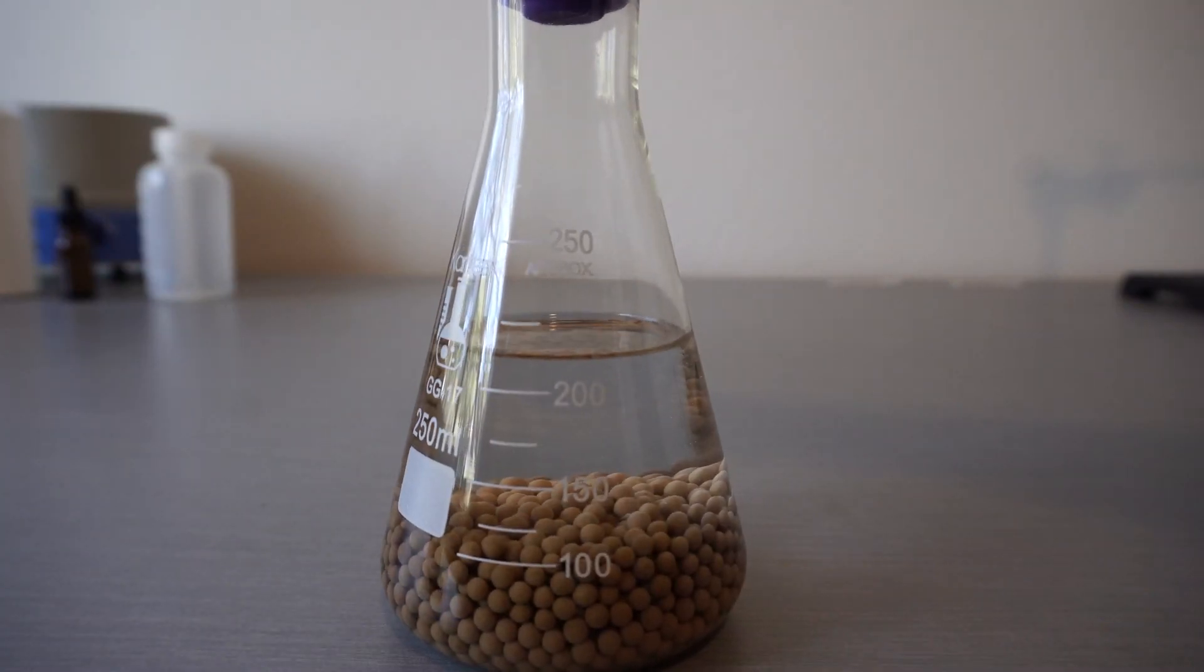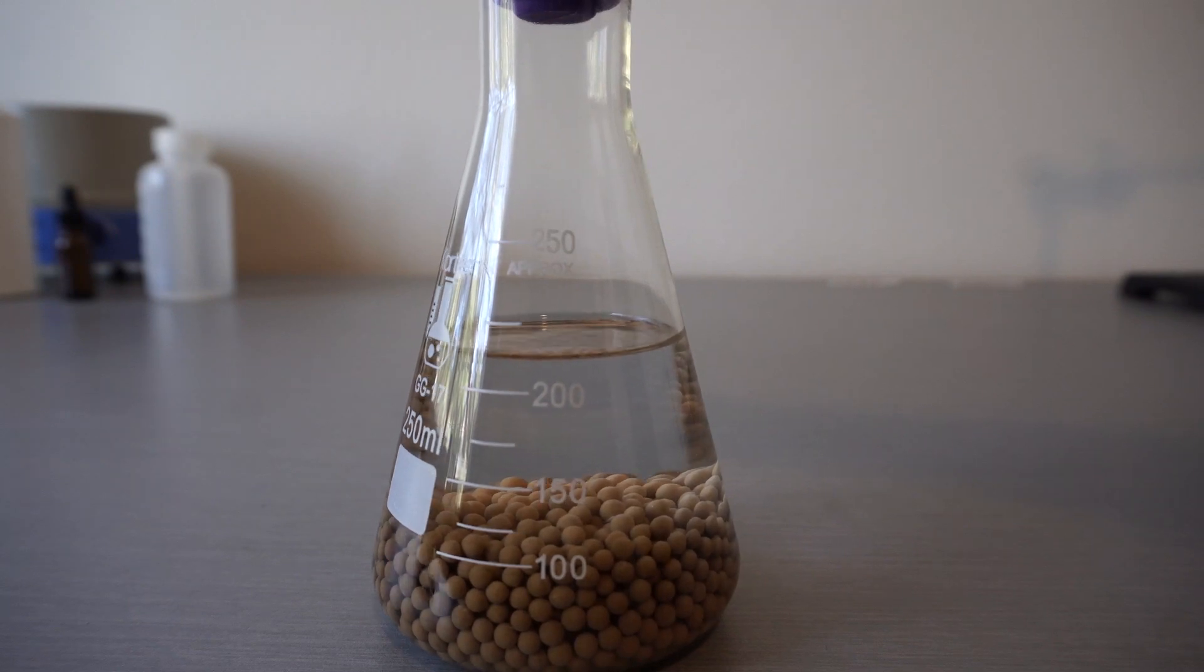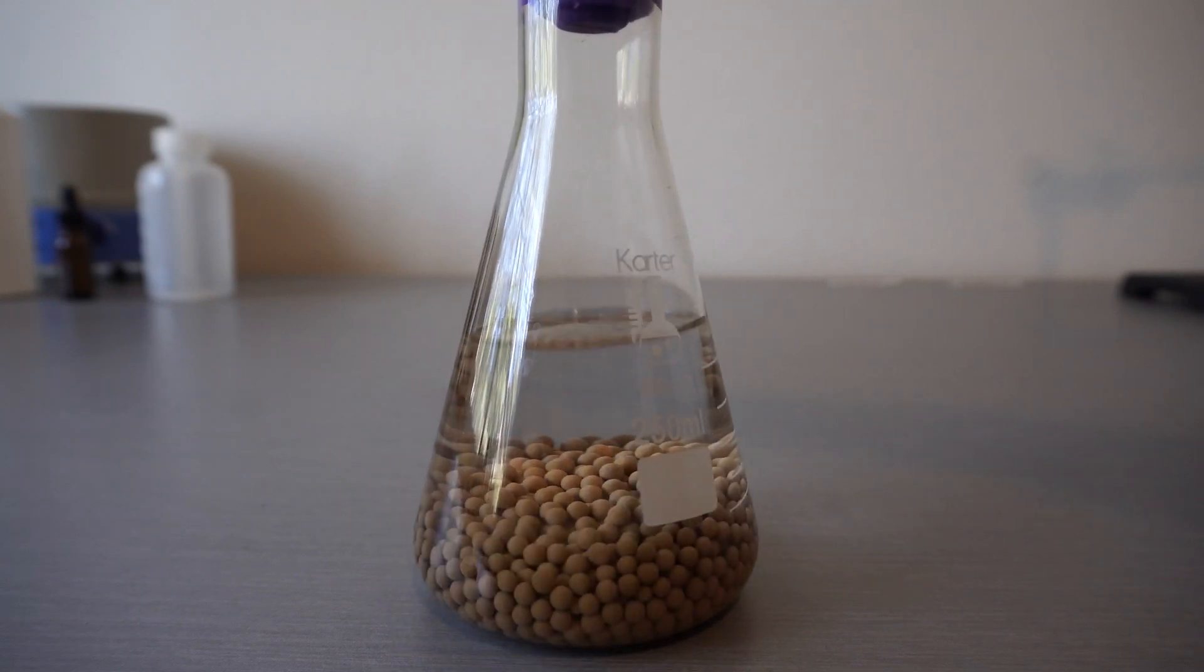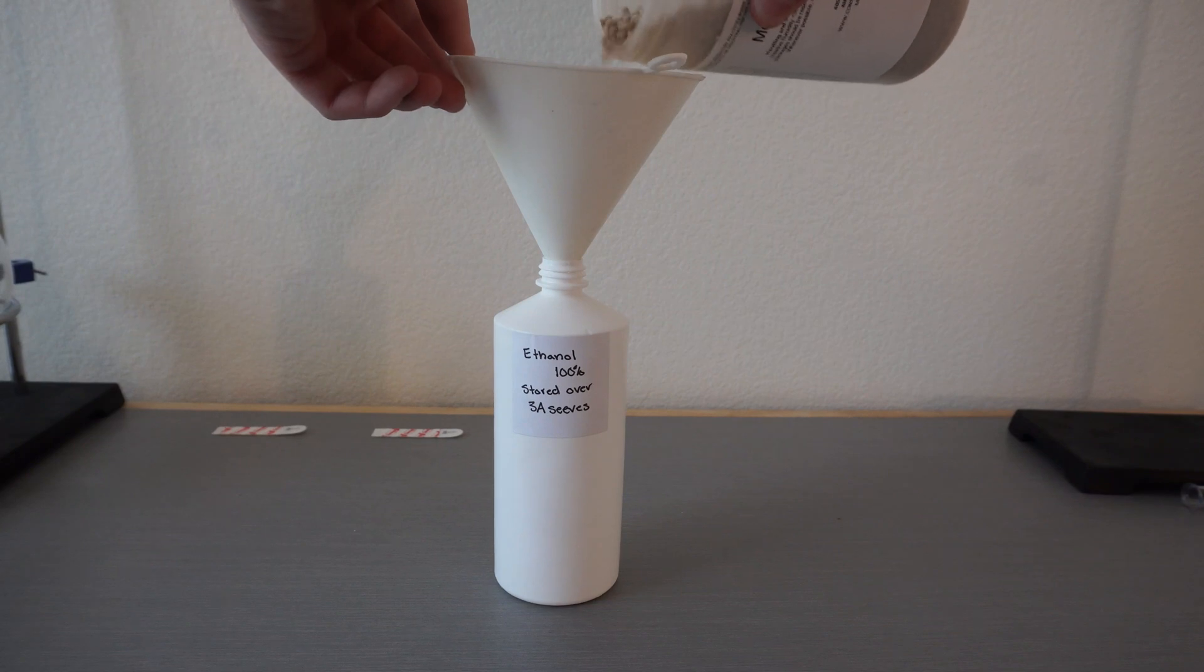I distilled out the isopropyl alcohol followed by storing it over the sieves. As long as your container is airtight, the sieves will continue to do their job.